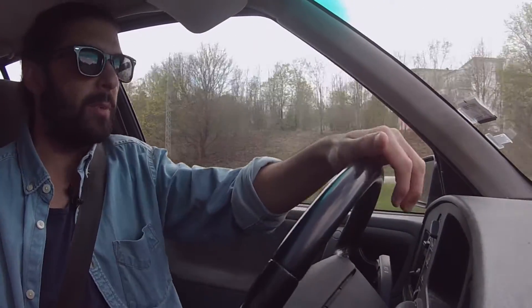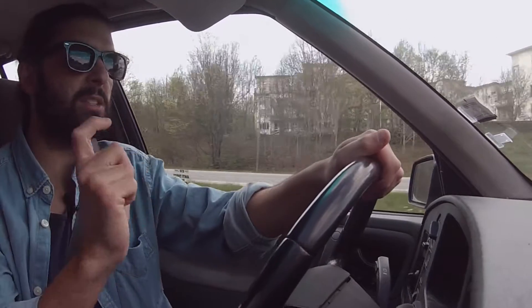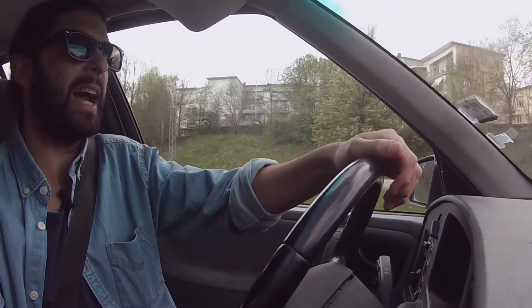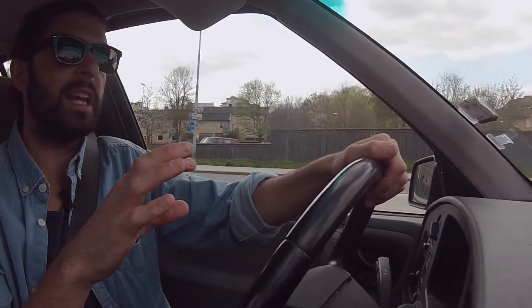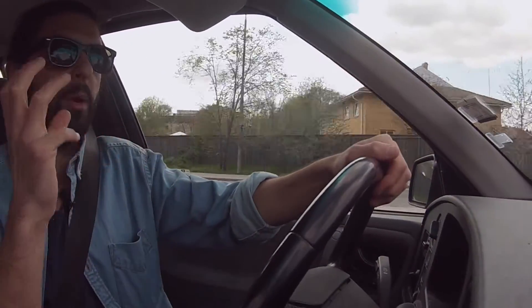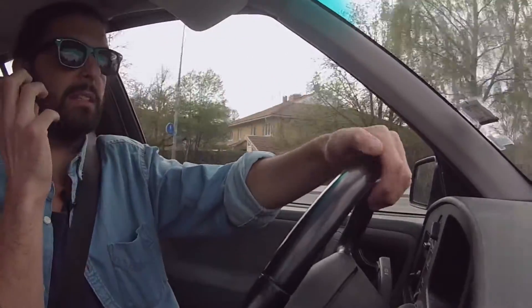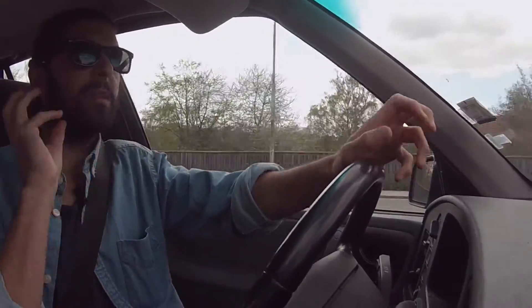Before we dig into these patterns, let me quickly say that essentially what all of these do is: you have a place where you want to call a method on an object, but instead of calling the method on the object directly, you call a method on some other object who delegates to that first object. That's the core of facade, proxy, and adapter. The nuance lies in why you want to do this and how you do it.